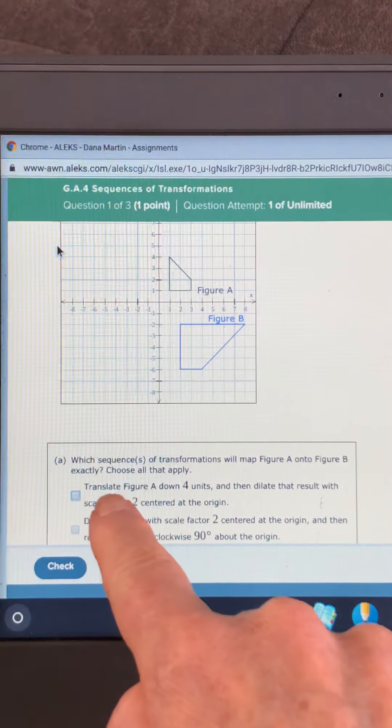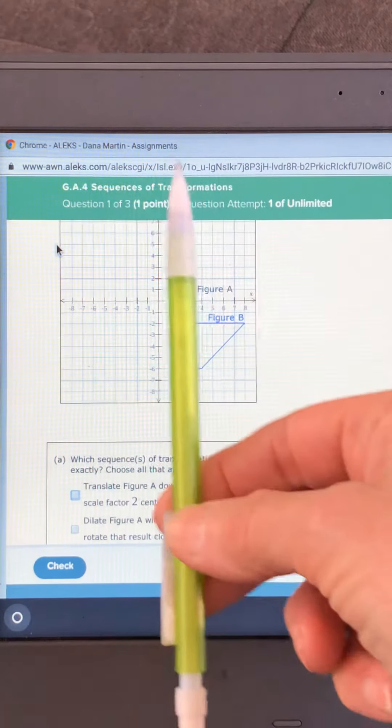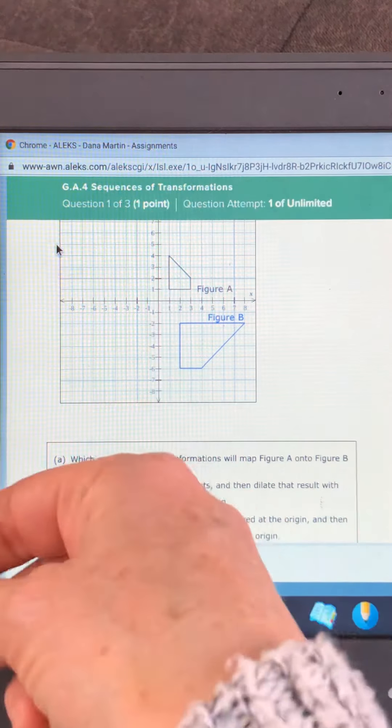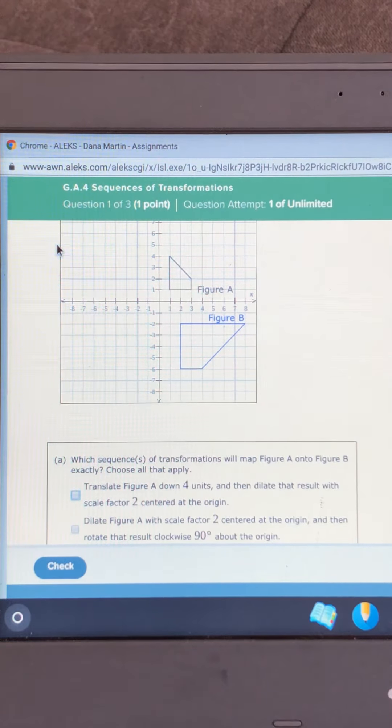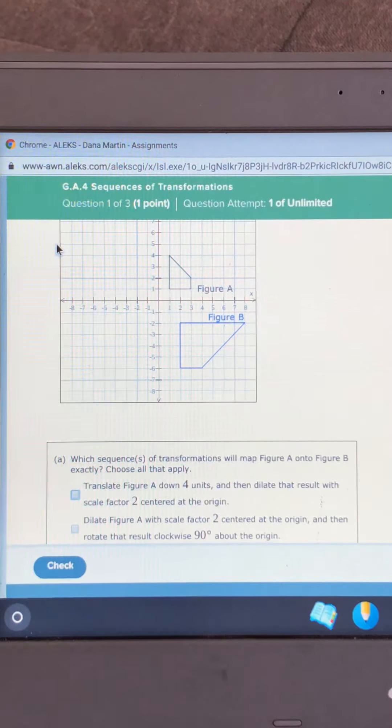It says that we translated figure A. Well to translate figure A, we can only go up and down with that point facing up or we can go sideways. This is not facing up so it's not the first. I'm not even gonna read anymore. I'm just gonna move down to the next one.